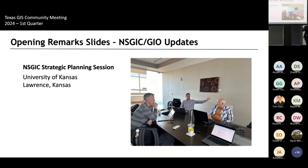Since I became president in September, one of the first things we did in November was invite the president-elect and past president to join me in Kansas, along with the GIO of Illinois — who is highly skilled in business development — to lay out a strategic plan and mission. We met for a few days to figure out how we'll work with business partners, support the states, and engage with federal partners. We're very excited that we're putting a real strategic plan together.